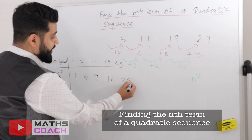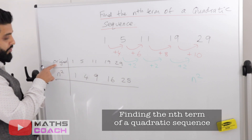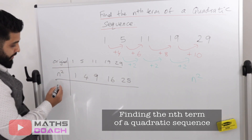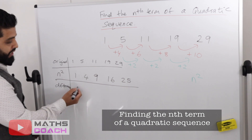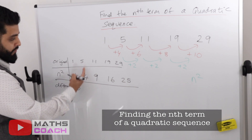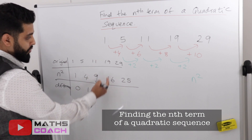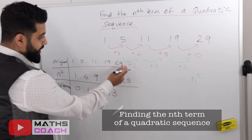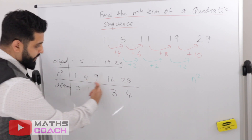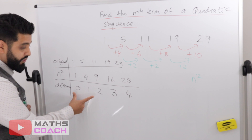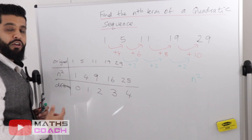Next, work out the differences between your original values and your n squared values. The differences are: 1 minus 1 is 0, 5 minus 4 is 1, 11 minus 9 is 2, 19 minus 16 is 3, 29 minus 25 is 4. So we now have a new sequence: 0, 1, 2, 3, 4.